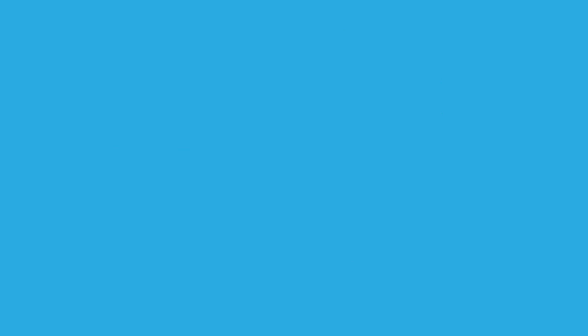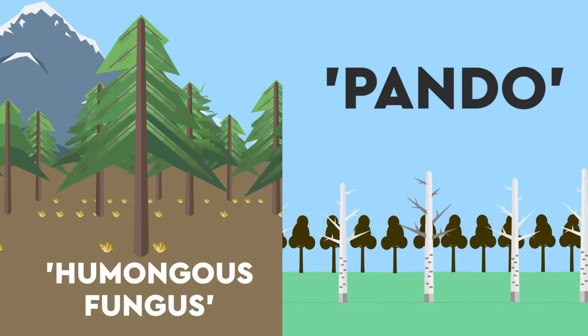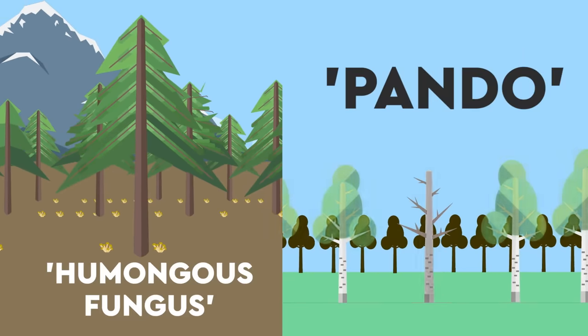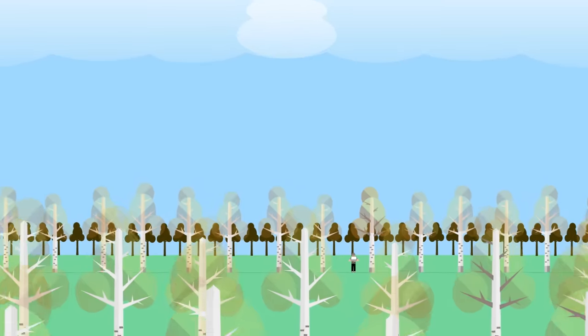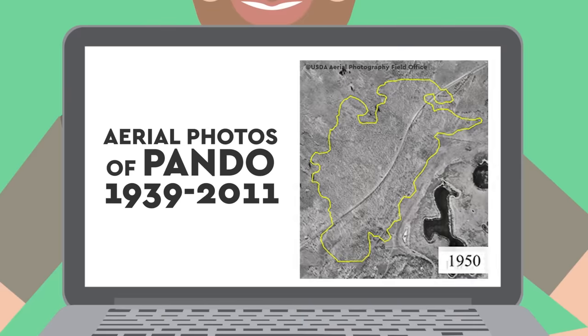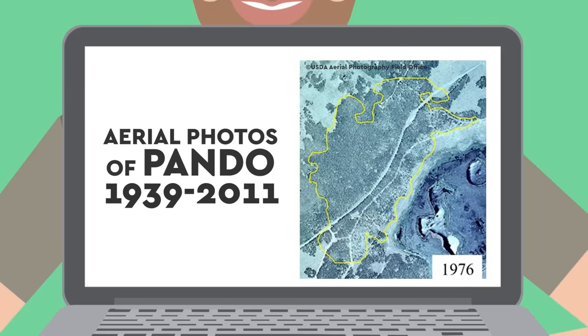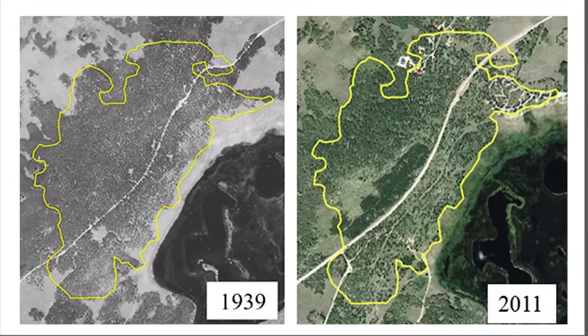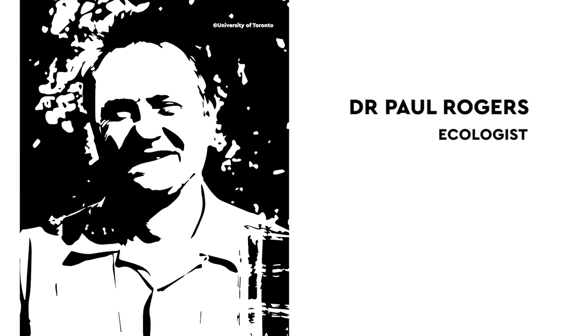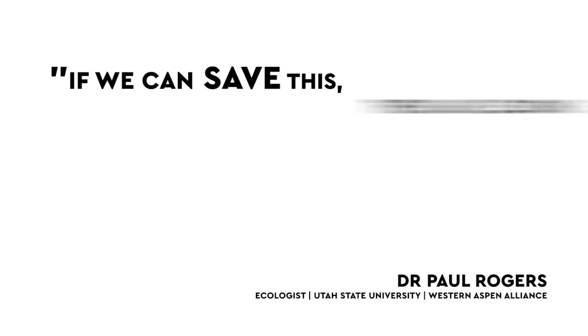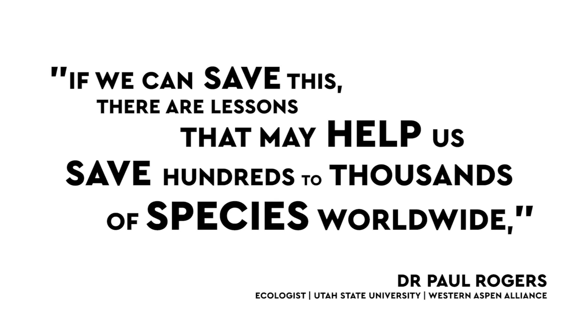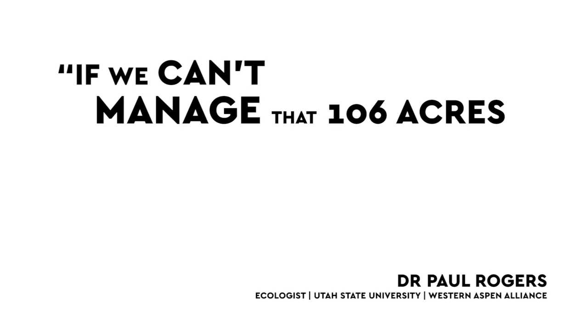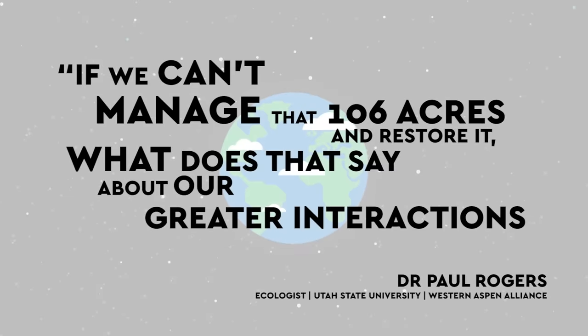It has substantially reduced over the past 70 years due to human interference, and it is thought that within the next 10 to 20 years, up to 80% of the entire grove could collapse. Dr. Paul Rogers, an ecologist who recently led a conservation effort to protect Pando, has said: If we can save this, there are lessons that may help us save hundreds to thousands of species worldwide. If we can't manage that 106 acres and restore it, what does that say about our greater interactions with the Earth?